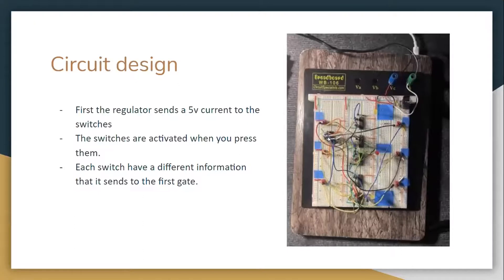The circuit design starts with a current of 12 volts that goes to the regulator which has two capacitors that give an output of 5 volts. This goes to the switches which are located three on each side of the board that represents rock, paper, and scissors.